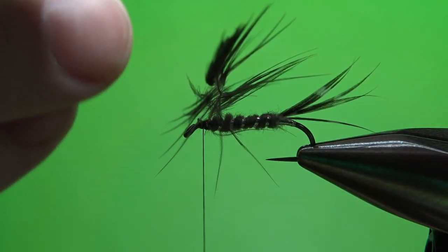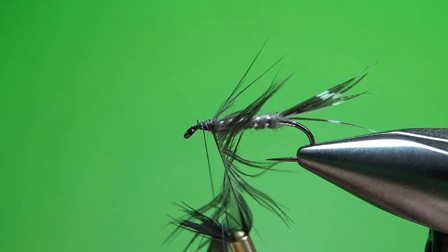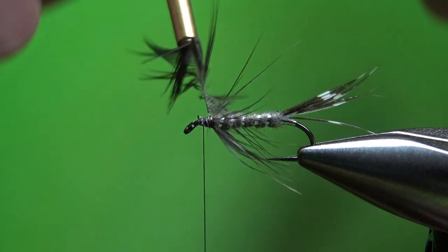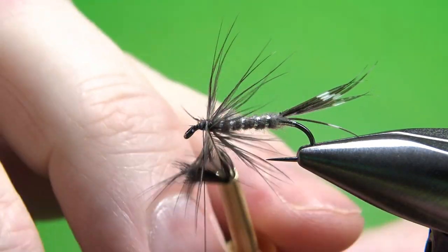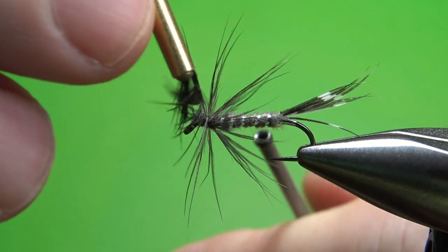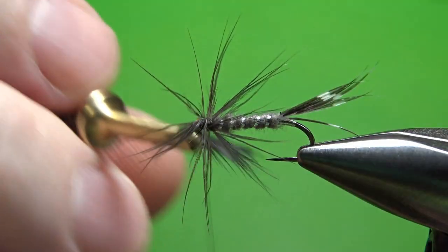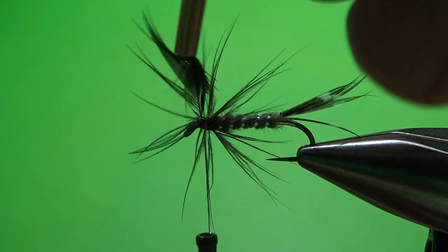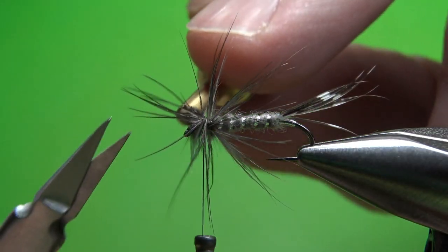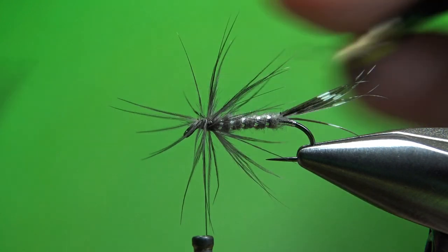Okay, that's one complete wrap. Now let's get our second one in. Okay, two thread wraps to catch this off. And I'm going to go ahead and snip this before I release it out of the hackle pliers. It just makes it a little bit easier sometimes.